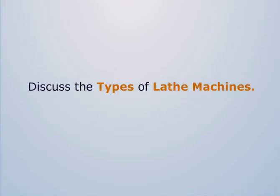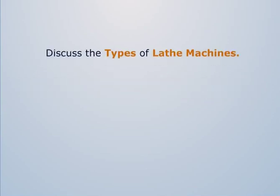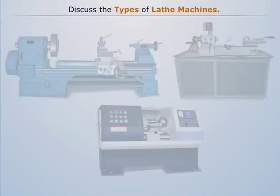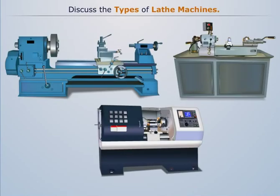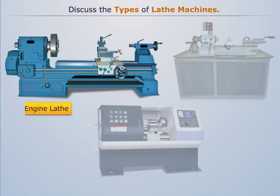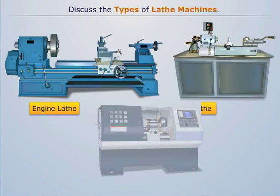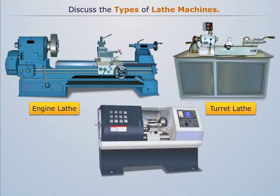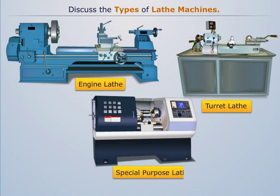Discuss the types of lathe machines. Lathes can be divided into three types for easy identification. The first one is the engine lathe, the second one is the turret lathe, and the third one is the special purpose lathe.